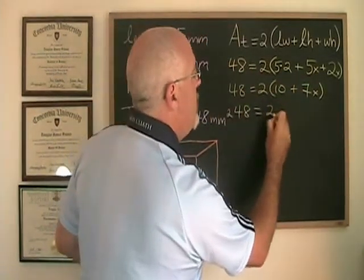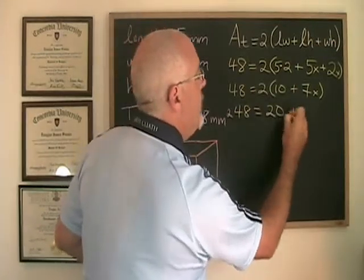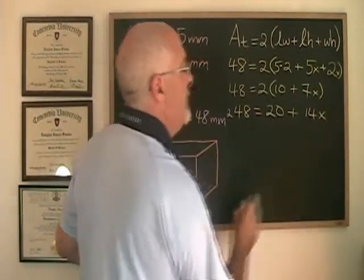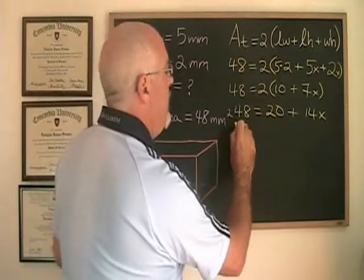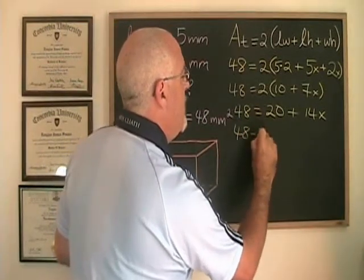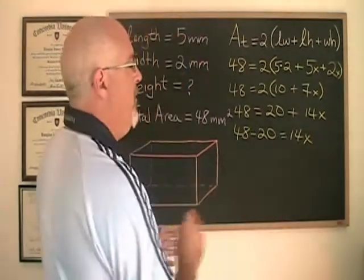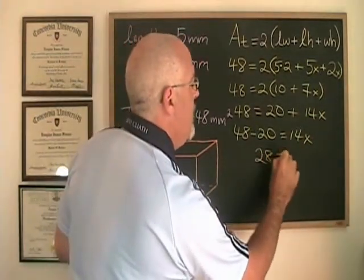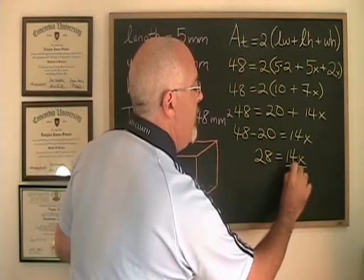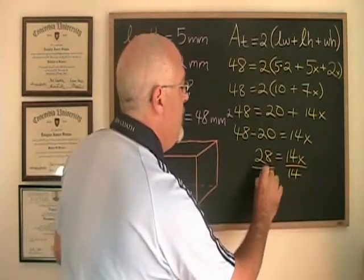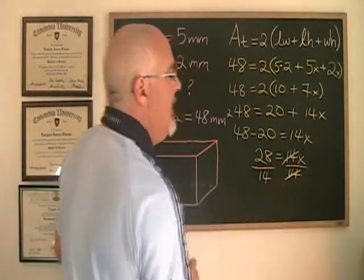2 times 10 is 20, 2 times 7x is 14x. If we move the 20 to the other side, we get 28. And now, when we divide both sides by 14, these cancel.